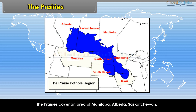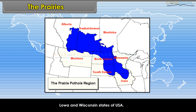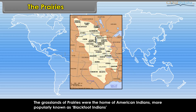The Prairies cover an area of Manitoba, Alberta, Saskatchewan, and Ontario provinces of Canada, and North Dakota, South Dakota, Minnesota, Iowa, and Wisconsin states of the USA. The grasslands of Prairies were the home of American Indians, more popularly known as Blackfoot Indians.